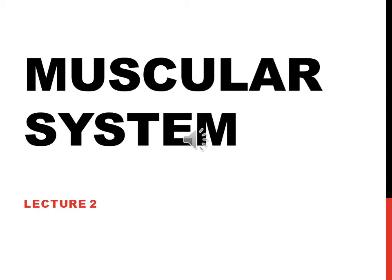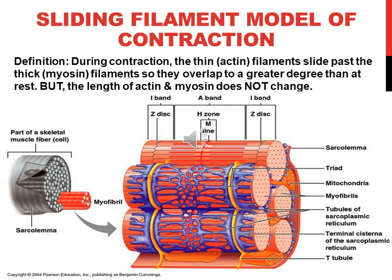Everything today is going to focus on how myofilaments — actin and myosin — slide past each other as the sarcomeres contract. During contraction, the thin actin slides past the thick myosin so that they overlap to a greater degree than when at rest. It's really important to remember which is which. But the length of the actin and myosin don't actually change themselves.